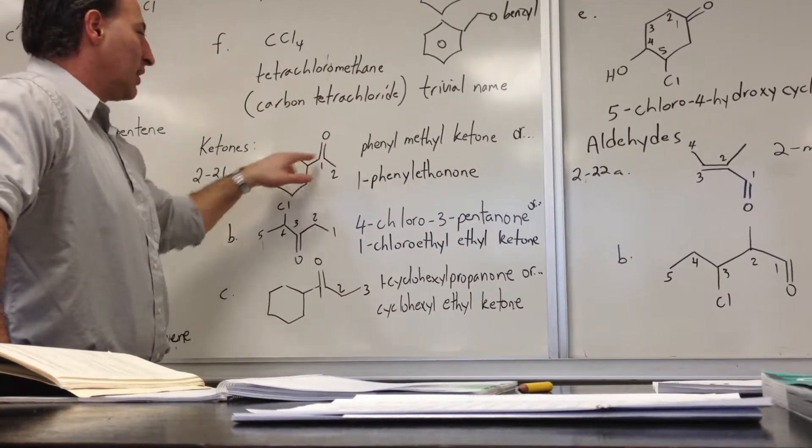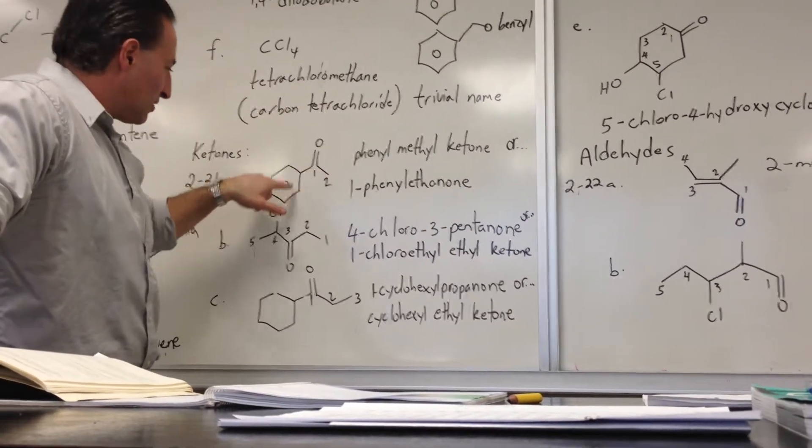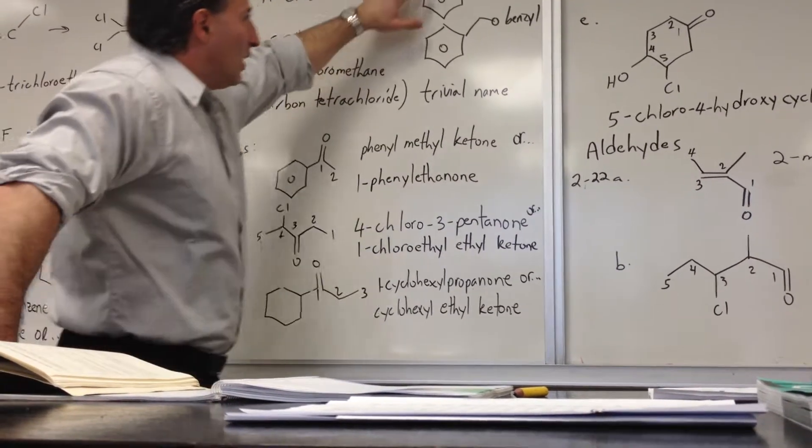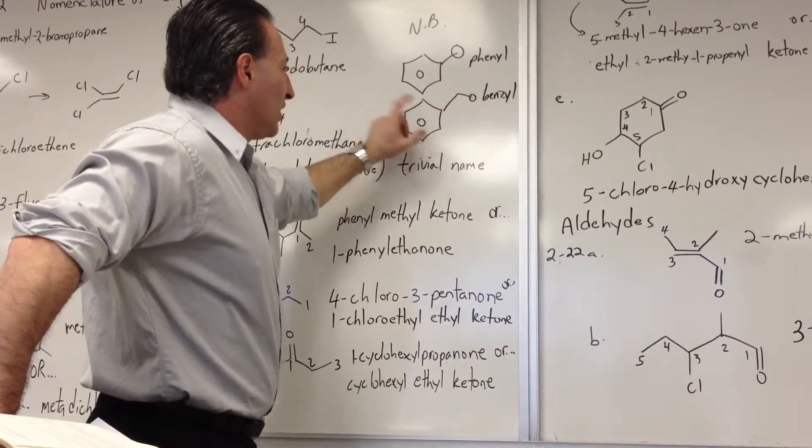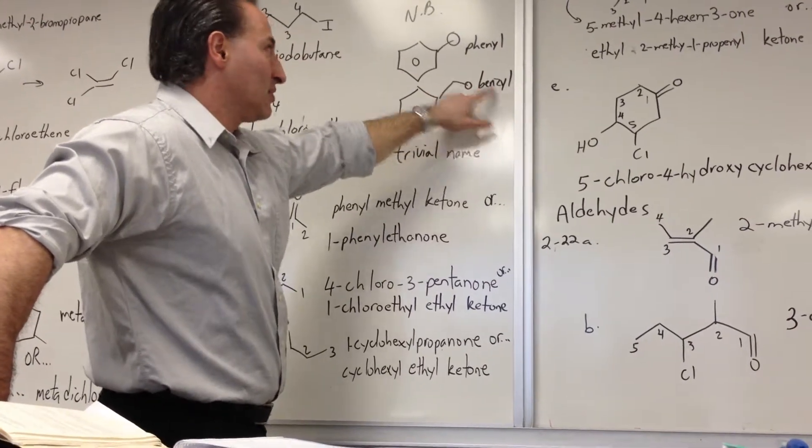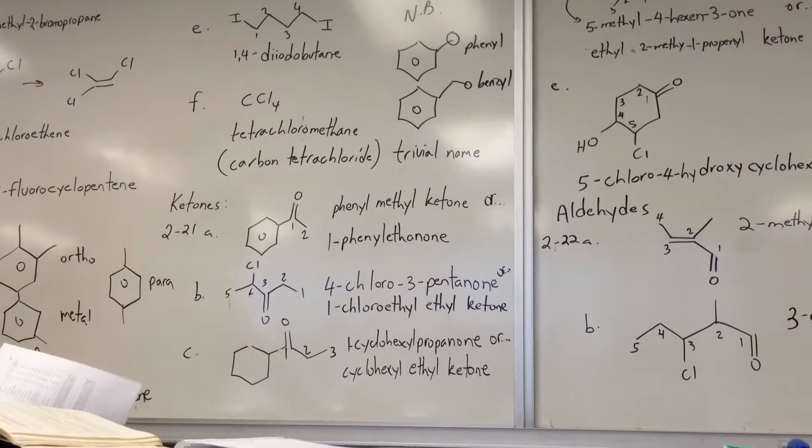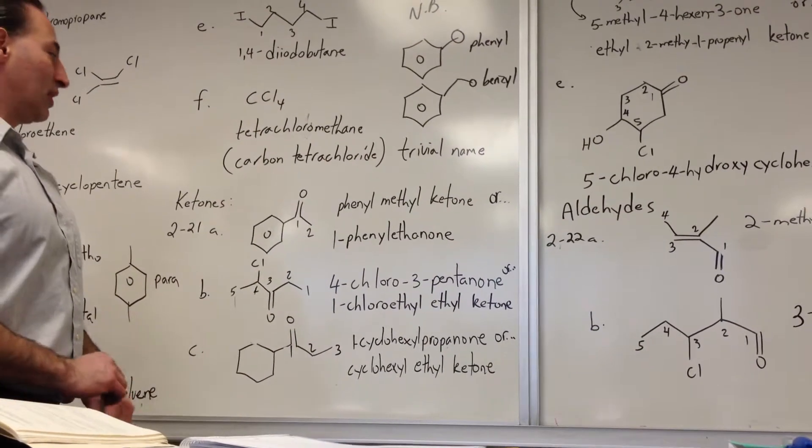So here we have a benzene ring attached to an ethanone. So we call it 1-phenylethanone because the phenyl group, this phenyl group here, basically a benzene ring with a pendant bond is called phenyl. Benzene ring with a methyl group, which then has an appended bond, is called benzyl. This is worthwhile memorizing because it occurs with enough frequency that it's good to know the trivial name for it.